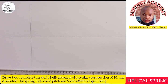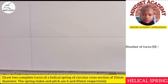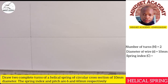We don't have an internal diameter nor an external or outer diameter, so we need to calculate for these. First, let me write out the parameters given: the number of turns is two, the circular cross-section is 10mm (represented by small d), the spring index is 6 (represented by C), and the pitch is 60 millimetres.